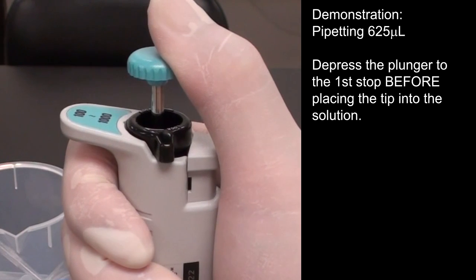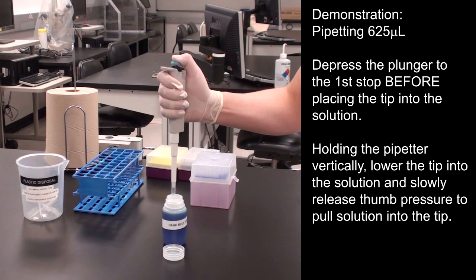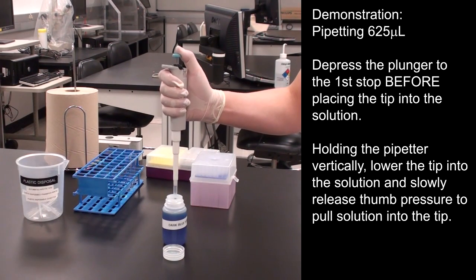Depress the plunger to the first stop before placing the tip into the solution. Holding the pipetter vertically, lower the tip into the solution and slowly release thumb pressure to pull solution into the tip.